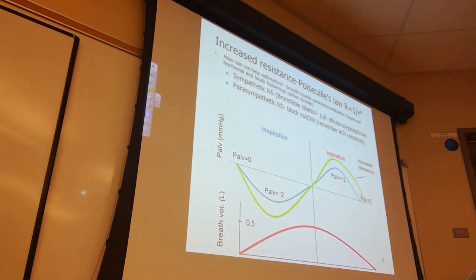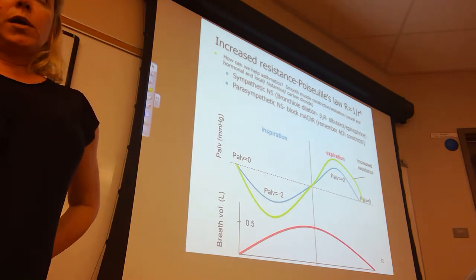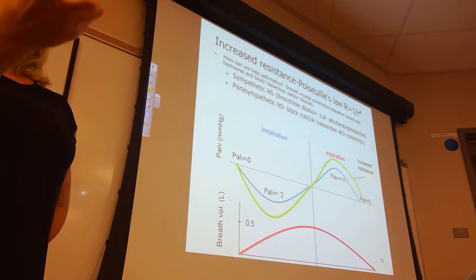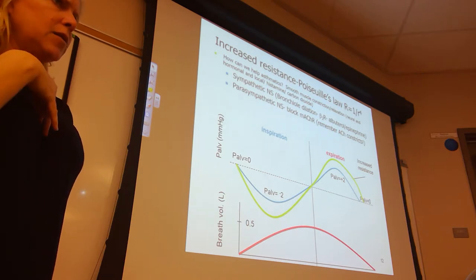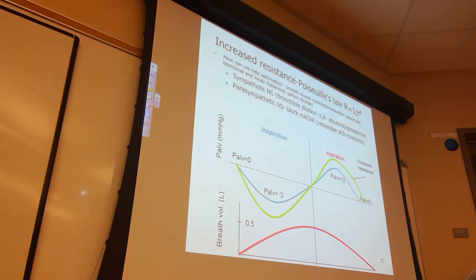We can take albuterol, which stimulates beta-2 receptors and leads to bronchial dilation. Another option is to block muscarinic acetylcholine receptors — blocking the parasympathetic division gives more control to the sympathetic division. The drug that can be given in aerosol form to hit those muscarinic acetylcholine receptors in the lung is ipratropium.